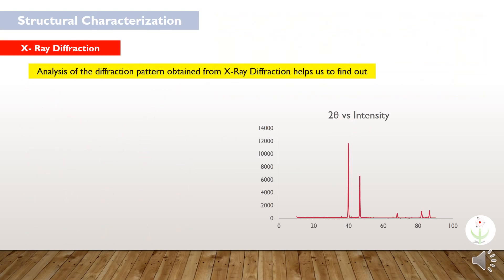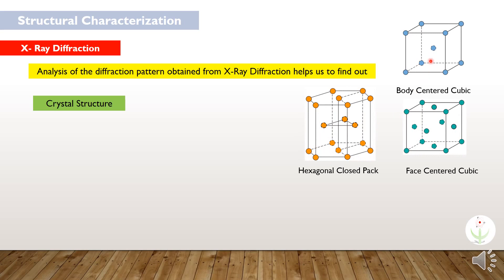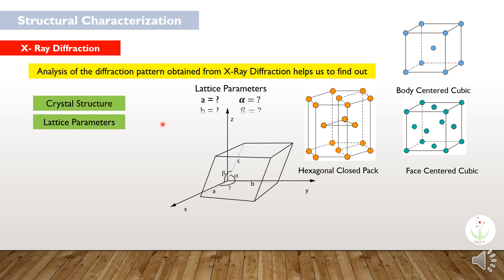The analysis of the diffraction pattern obtained from X-ray diffraction helps us to find out the crystal structure. Like whether the crystalline arrangement is body centered cubic or face centered cubic or any other type of crystalline arrangement. Similarly, lattice parameters can also be found out of the unit cell.